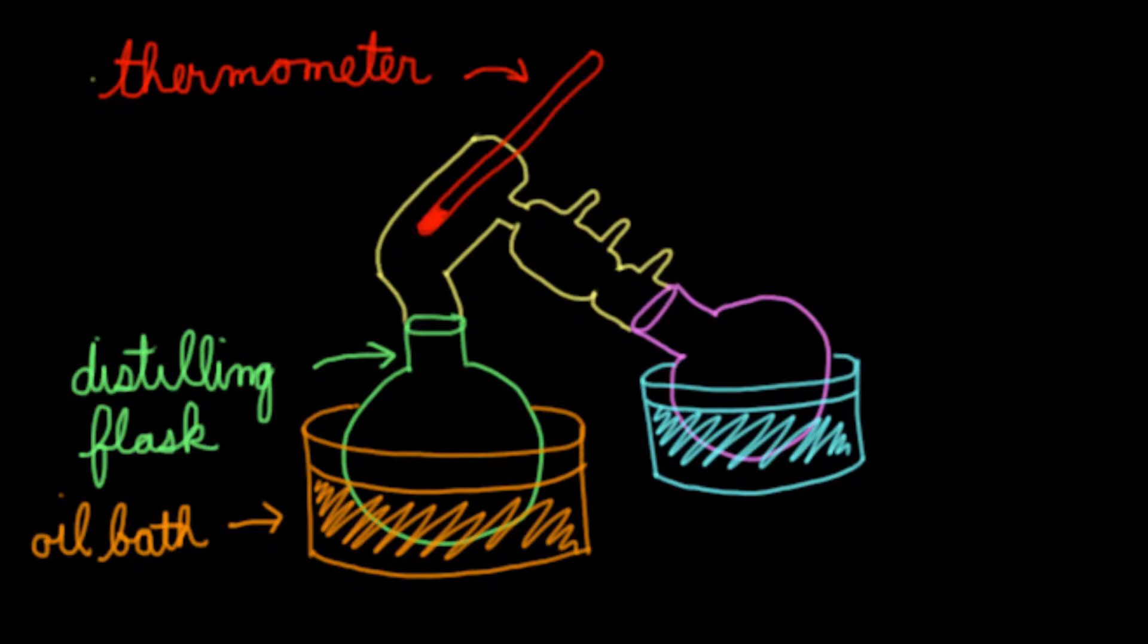And shown in yellow is the condenser. With a condenser, water has to cycle in and then out. This keeps the condenser cool. And the reason the condenser needs to be cool is because distillation involves a series of vaporizations and condensations.